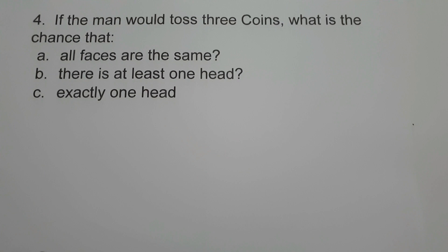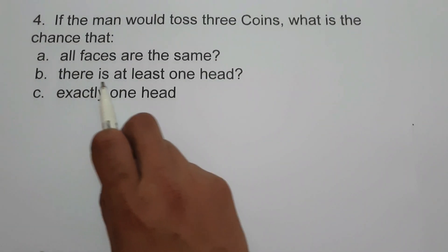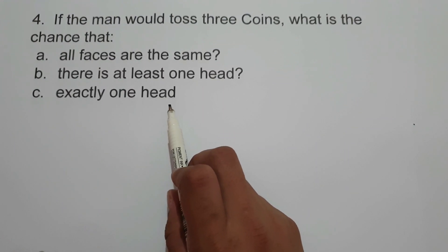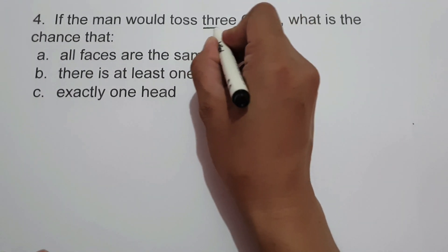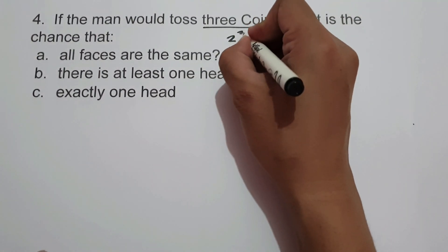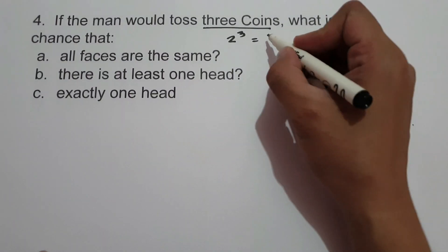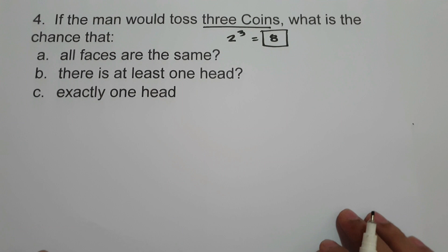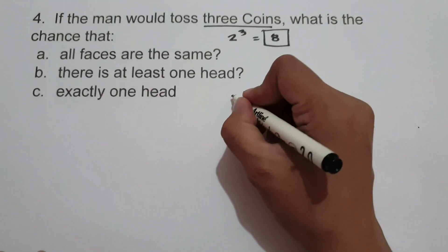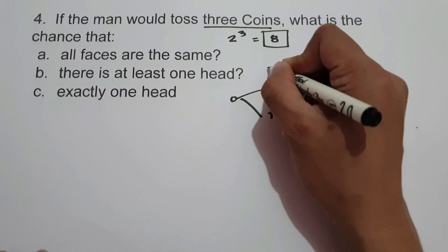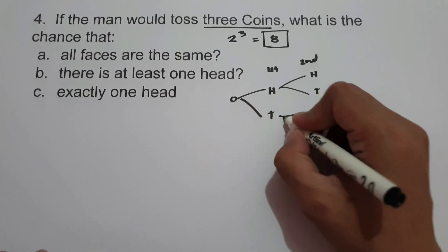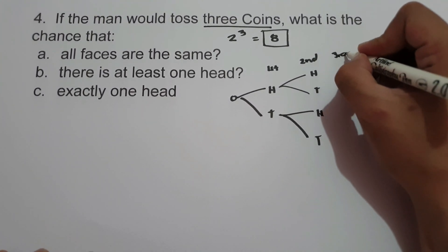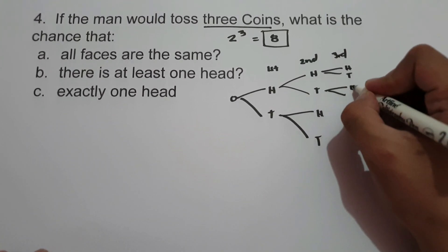On the last set of examples, if a man would toss 3 coins, what is the chance that A — all faces are the same, B — there is at least one head, C — exactly one head? First, let us determine the total number of possible outcomes: 2 raised to 3 equals 8. To answer this, we will illustrate the problem using a tree diagram showing head and tail on the first, second, and third toss.